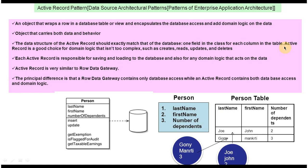Active Record is a good choice for domain logic that isn't too complex. We can choose this pattern if the domain logic is not too complex — like some simple calculations. The fourth point is that each Active Record is responsible for saving and loading to the database, and also for any domain logic that acts on the data.